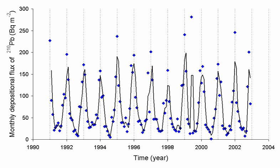Radon is one of the densest gases at room temperature and is the densest of the noble gases. Although colorless at standard temperature and pressure, when cooled below its freezing point of 202 K (minus 71 degrees Celsius, minus 96 degrees Fahrenheit), radon emits a brilliant radioluminescence that turns from yellow to orange-red as the temperature lowers. Upon condensation, radon glows because of the intense radiation it produces.